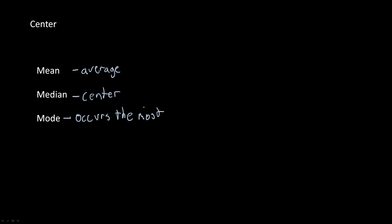A brief explanation: if we had the data set of 2, 3, and 5, the mean would be adding all of these together — 10 divided by the total number of numbers in the data set, which is 3 — to get 3.33. And that would be the mean of our data set.